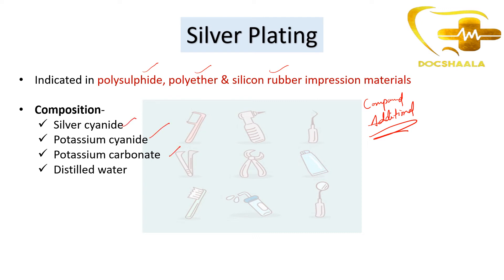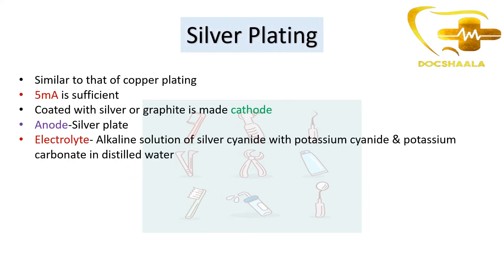The composition of the silver-plated electroform die electrolyte is silver cyanide, potassium cyanide, potassium carbonate, and distilled water — an alkaline solution. The procedure is similar to copper plating, except that only 5 milliamperes of current is used instead of 15. The impression surface is coated with silver or graphite and made the cathode, while silver plate serves as the anode.